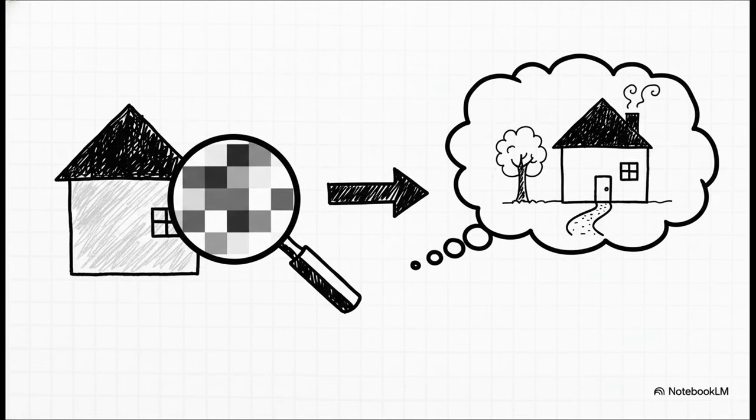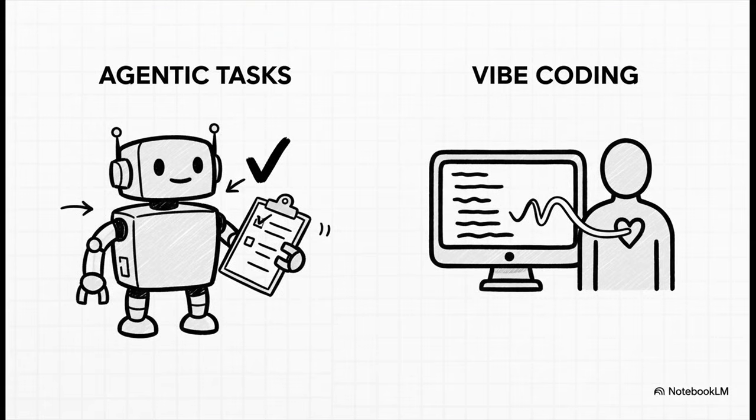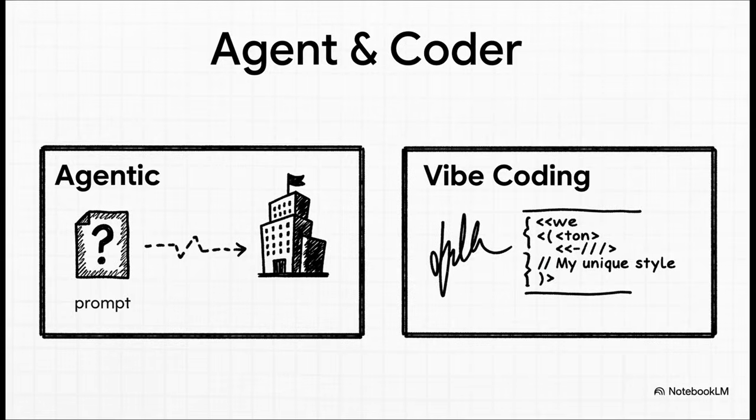The third superpower is a combination of agentic tasks and something they're calling vibe coding. Agentic basically means it acts like your own personal agent—it doesn't just answer questions, it completes complex jobs for you from beginning to end. And vibe coding is its ability to write code that isn't just functional, but is clean, organized, and actually matches your personal style. It's like having a coding partner who just gets your whole vibe.